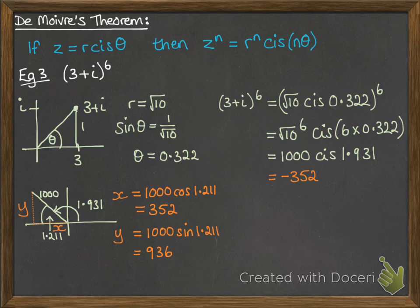Now x is on the negative side of the axis, so we need to make sure that 352 is a negative. And y is on the positive imaginary axis, so that is a plus 936i.